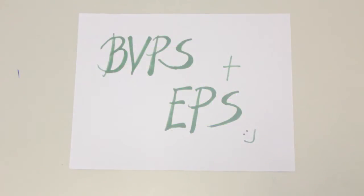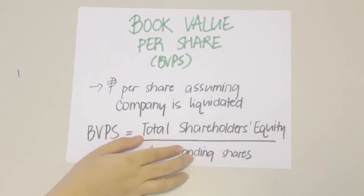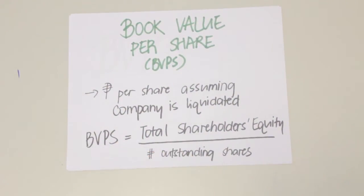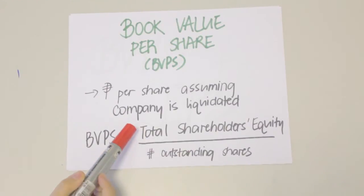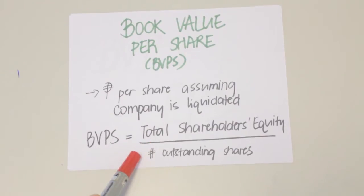Today we'll be talking about book value per share and earnings per share. Book value per share, or simply referred to as BVPS, is the amount that would be paid on each share assuming the company is liquidated, and the amount available to stockholders is exactly the amount reported as stockholders' equity. Since this is only for a basic accounting class, we would only be focusing on computing for the book value per share of a corporation with only one class of share. The formula is: total shareholders' equity divided by the number of outstanding shares.